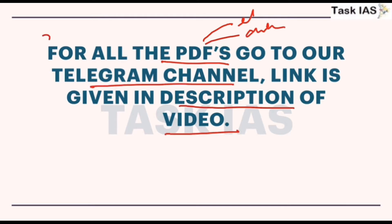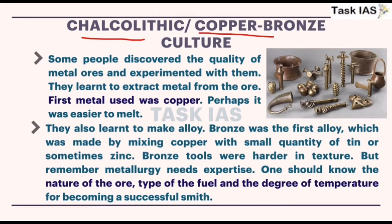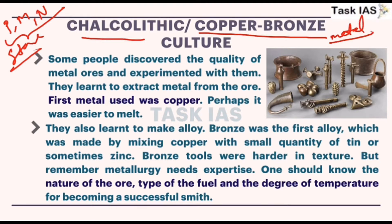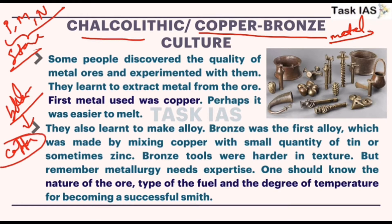So, Chalcolithic or Copper-Bronze Age. Till now — whether Paleolithic, Mesolithic, or Neolithic — all are Stone Ages. But now a metal has started being used. New technology was needed for this. Linking it with continuous biological evolution, the human brain started thinking and exploring new things, and this exploration resulted in the finding of copper, which was the first metal used by human beings. Parallelly, bronze was also explored.